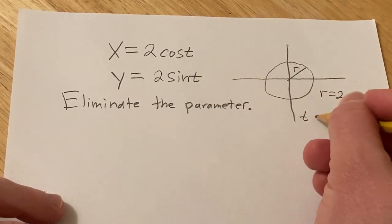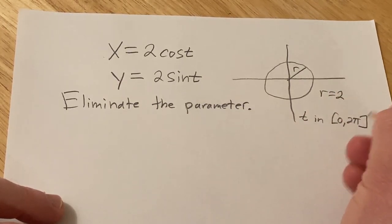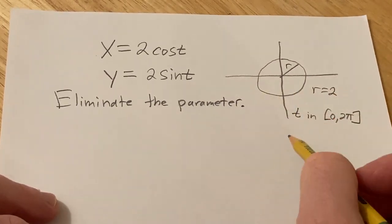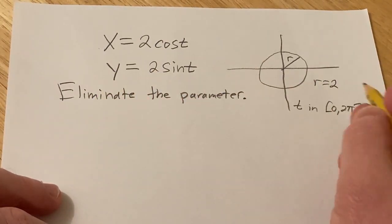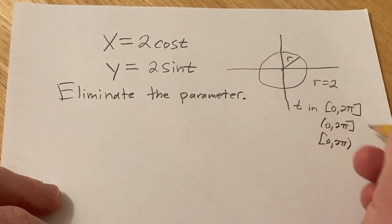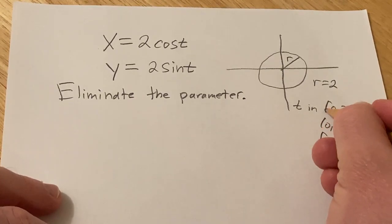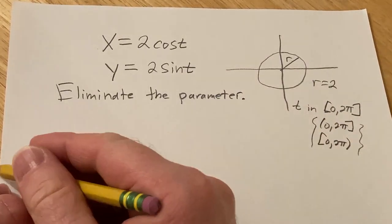If you let t vary in the interval 0 to 2π you'll get the circle. Okay so you can actually even exclude one of the endpoints, so you can actually say 0 to 2π because at the endpoints the value is going to be the same. So any of these intervals will give you the whole circle. These will trace it out exactly once.